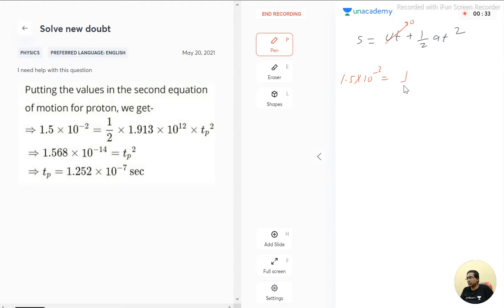So s is equal to half a. The value of acceleration is given, that is 1.913 into 10 raise to the power 12. This is acceleration into t square. Now let's solve this.